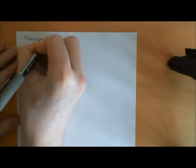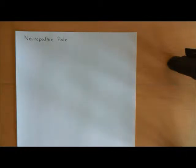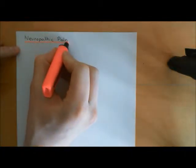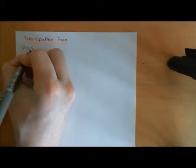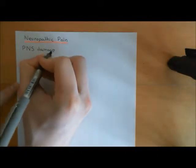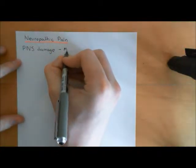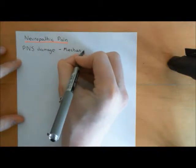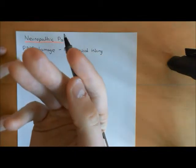Starting with the peripheral nervous system: the key obvious example is mechanical injury to a nerve. Potentially this could be because a certain portion of the body has been amputated due to trauma. So a leading example of damage to the PNS is mechanical injury to a nerve, including amputation of a limb or maybe something smaller like the distal phalanx.